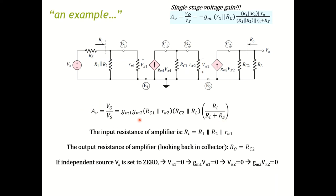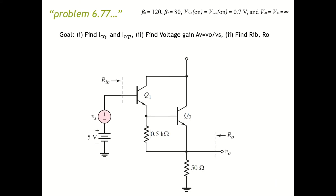Let's work through a problem together. Given this circuit — also found in the textbook as problem 6.77 — the parameters are: beta1 for transistor Q1, beta2 for transistor Q2, VBE = 0.7 V, and no Early effect. You need to do three things: find the quiescent collector current for each transistor, find the total voltage gain of this two-stage amplifier, and find the input resistance at the base Rib and the output resistance Ro.